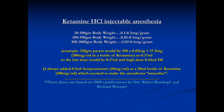For a 350-gram bird at the lower dose of 0.05 mg/gram: 0.05 × 350 = 17.5 mg. Since the bottle is 100 mg/mL, you pull up 0.17 mL. That's the low dose injection. The high dose would be 0.34 mL. The injection is given IM, usually into the chest muscle.